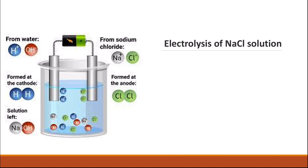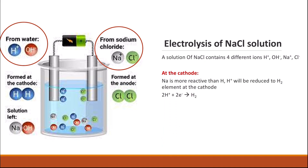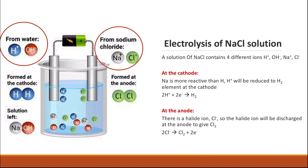Sodium chloride in aqueous solution is another example. We have sodium and chloride from the salt, and hydrogen and hydroxide from water. At the cathode, sodium is more reactive than hydrogen, so hydrogen is reduced at the cathode, giving hydrogen gas. At the anode, we have the halide (chloride) and hydroxide — the chloride is oxidized at the anode, giving chlorine gas. The remaining solution contains sodium and hydroxide ions.